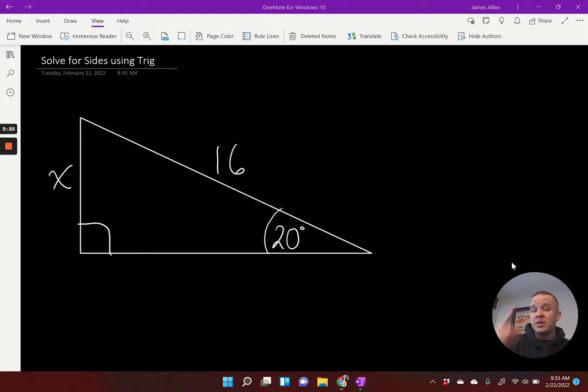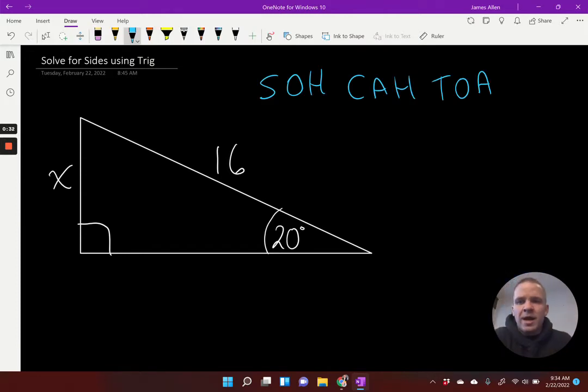With Pythagorean theorem, we needed two sides to find the third side. Here, I have an angle and a side, and I can find a side. So let's do that. We're going to solve for x. First off, I think it'd be helpful if we wrote down our wonderful SOHCAHTOA.